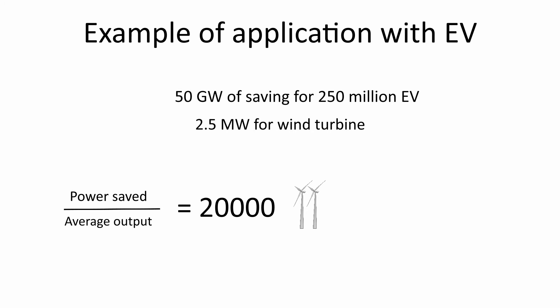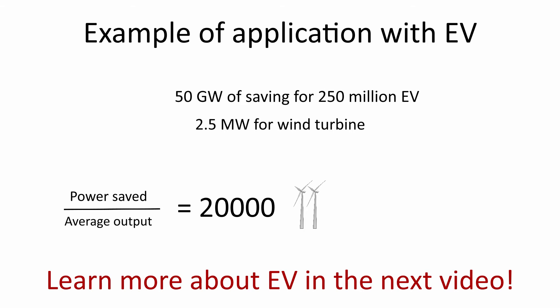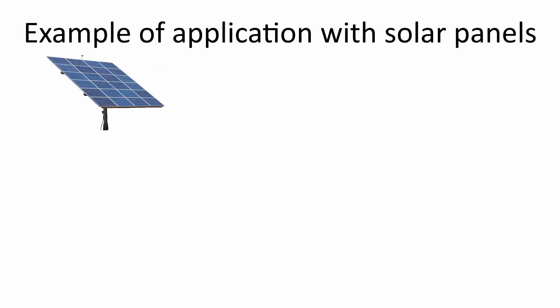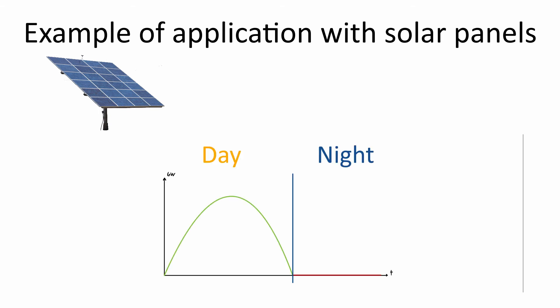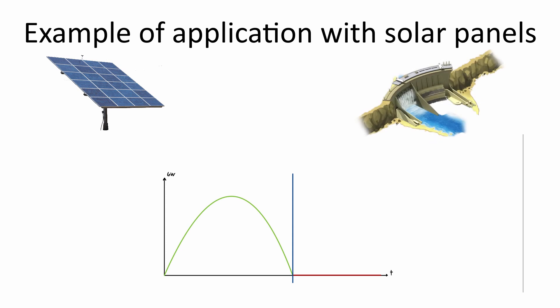You will learn more about electric vehicles in my next video on advanced technologies in electrical engineering. Another example could be the integration of solar panels into the national grid. The output of the solar grid is variable by nature and can be approximated by a sinusoidal function. When the output is getting lower, the generation of electricity has to be substituted by other energy sources, for example hydroelectric power generation.